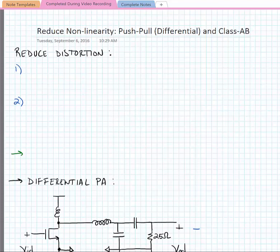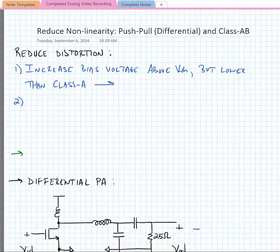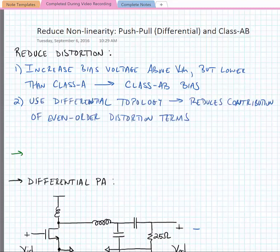Luckily, the distortion can be reduced in a class B amplifier in a couple of different ways. We can increase the bias voltage of the transistor above VTH but lower than what we would use for our class A, and this is called a class AB bias. The second way that we can reduce distortion is by using a differential topology. The differential topology reduces the contribution of even order distortion terms to the output.